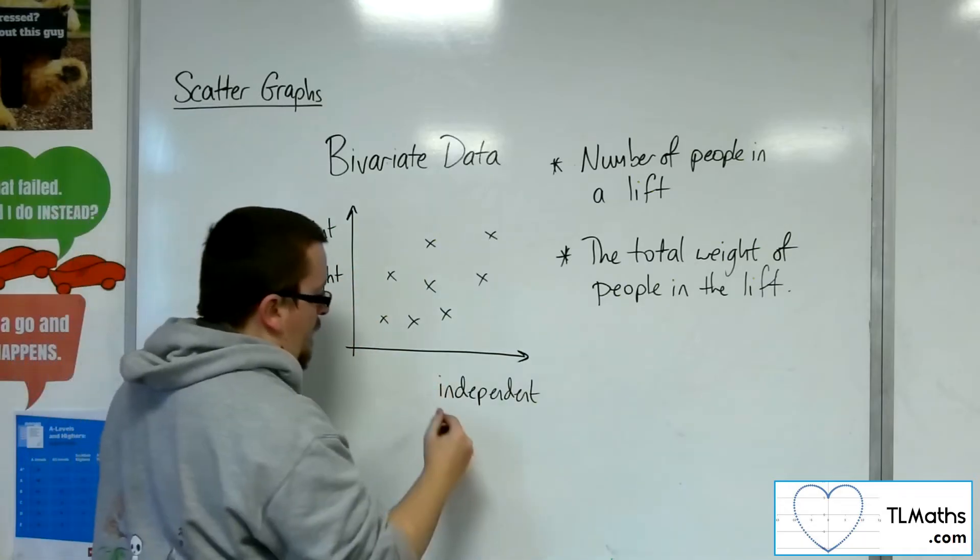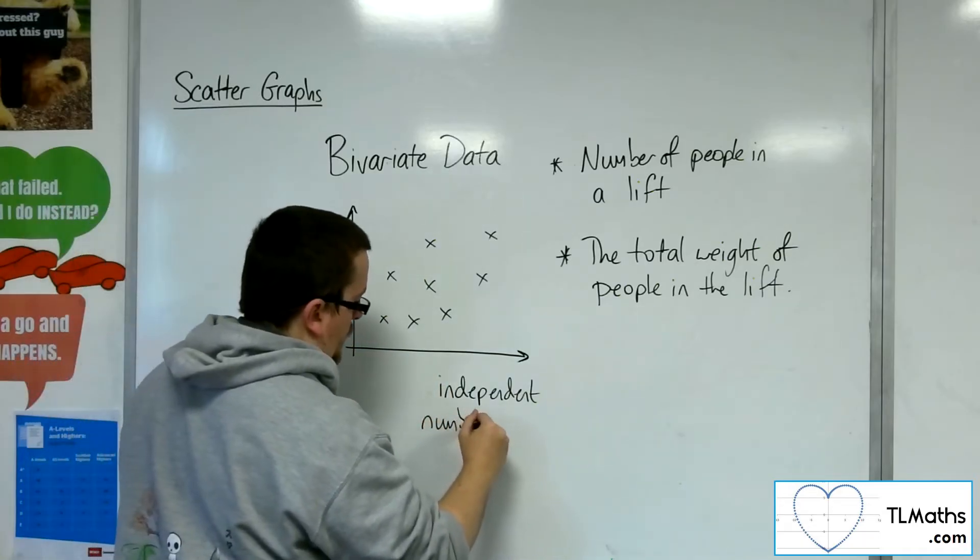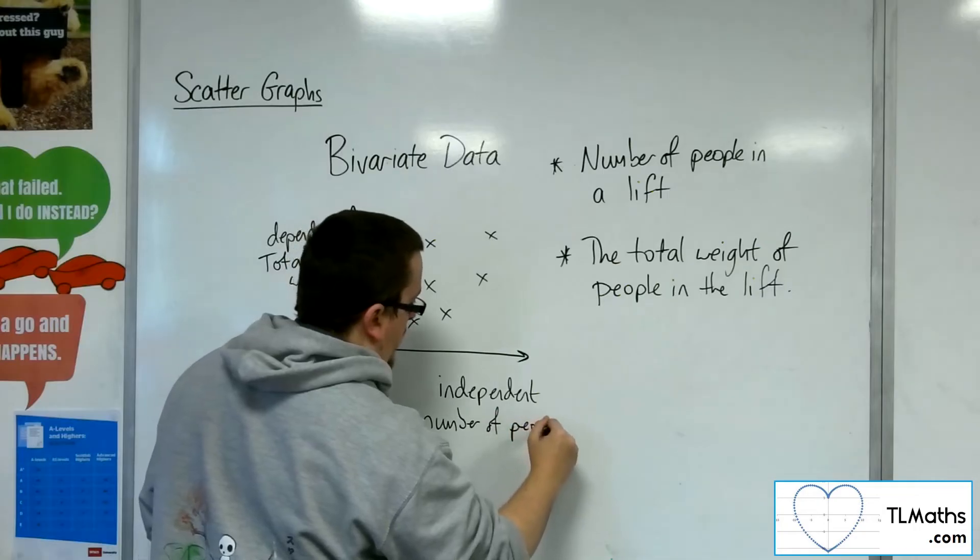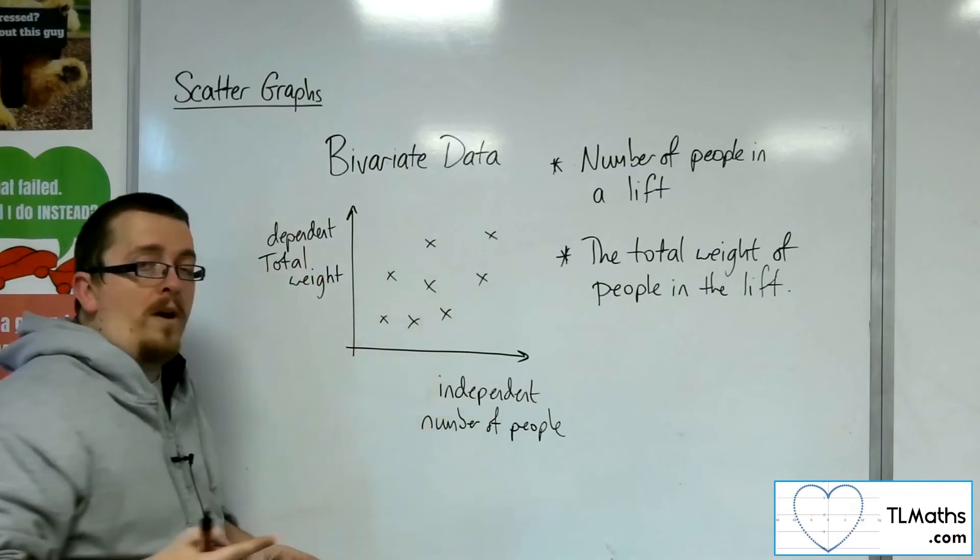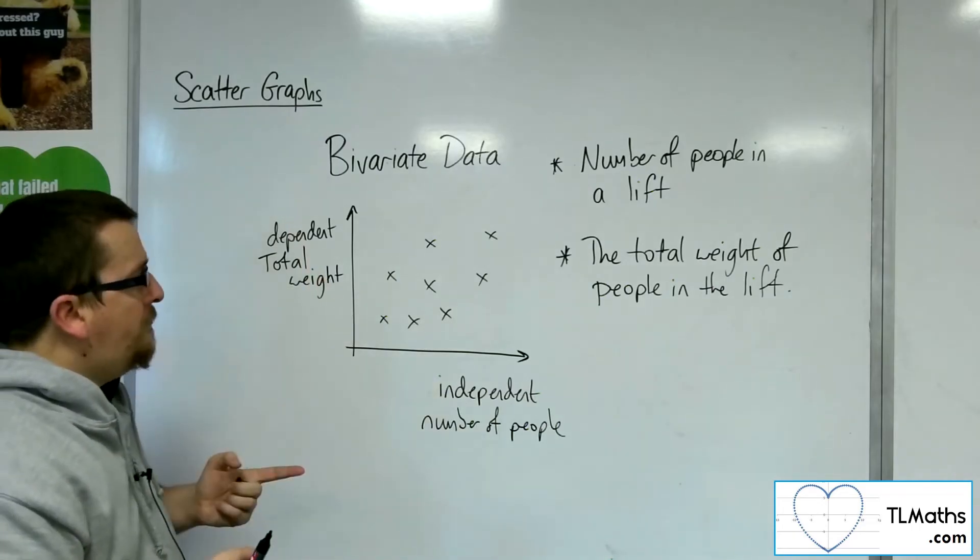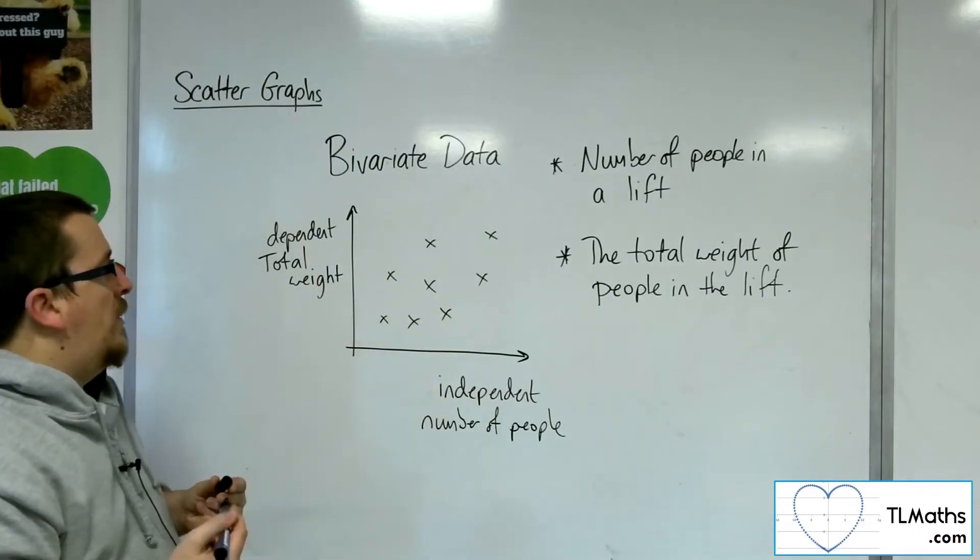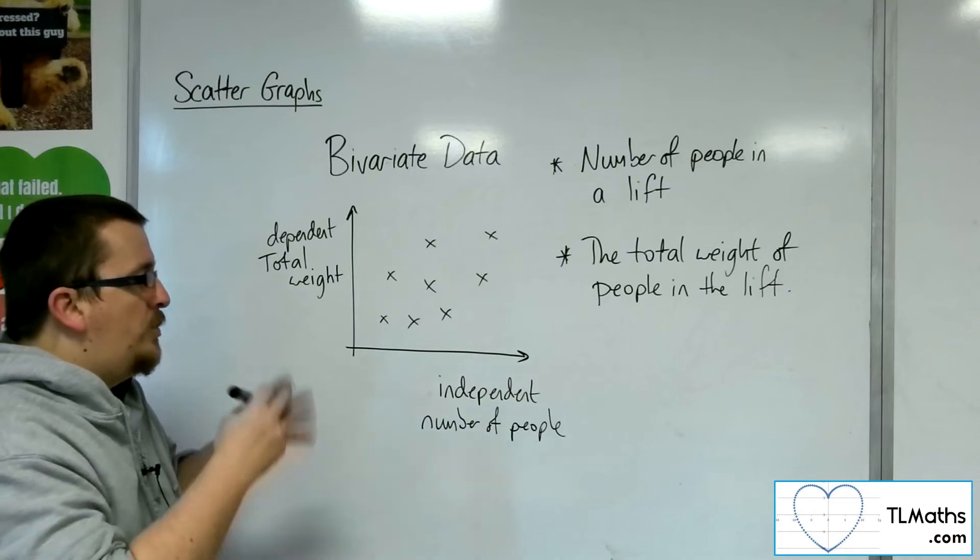Well, the number of people in the lift is the independent variable. And so you should plot number of people along the x-axis and total weight on the y-axis. OK, so that is how you would generally do it.